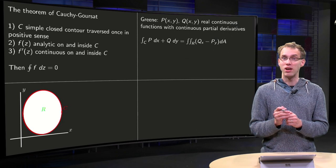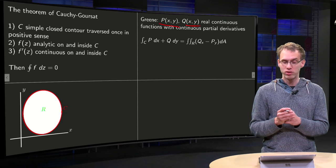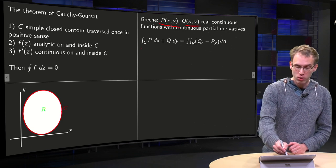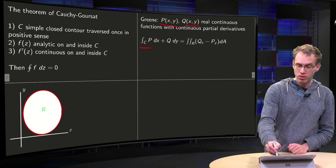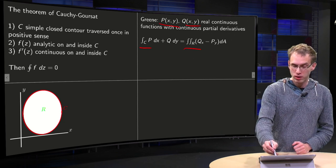Then we know from real analysis Green's Theorem. What does Green tell us? If you have real functions P and Q of X and Y, continuous with continuous partial derivatives, then you can express the integral along C, along the boundary, in terms of an area integral along R, a double integral, and then you have to integrate Q_x minus P_y.